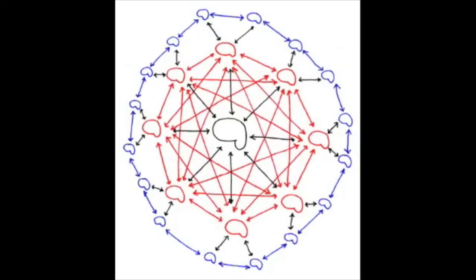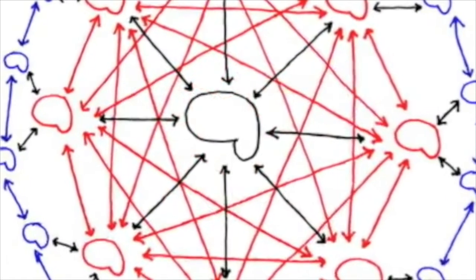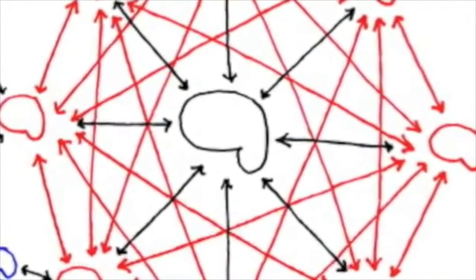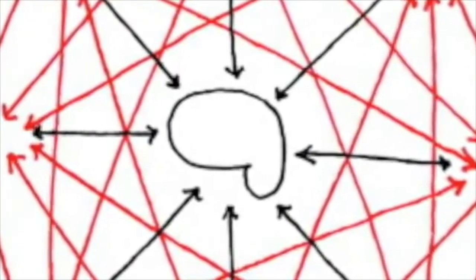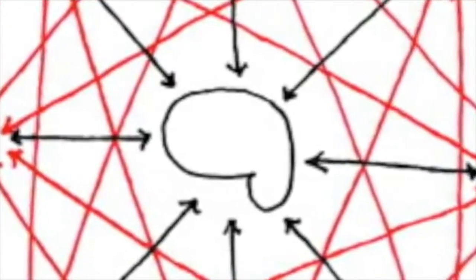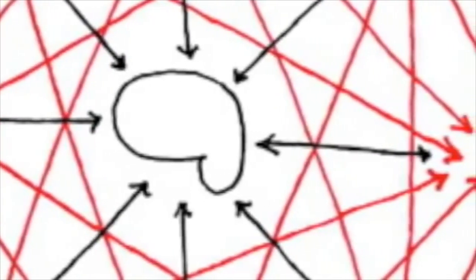In this closed network model, we see that there is a central psyche, the ego, depicted in black, surrounded by any number, here eight are used, of their closest friends, family, lovers, bosses, peers, and enemies, depicted in red.